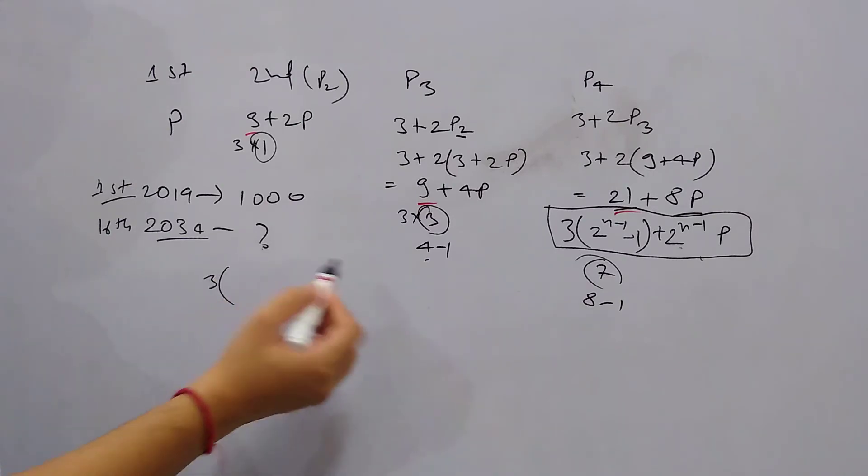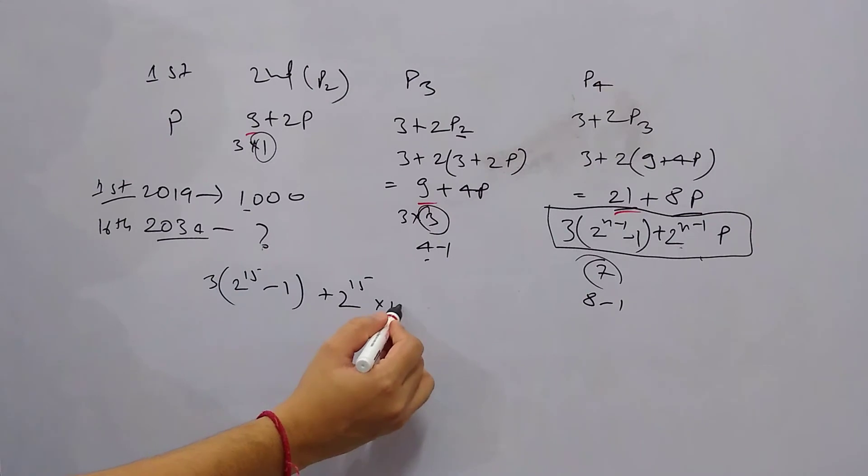So then it becomes 3(2¹⁵ - 1) + 2¹⁵ × p. And the value of p, or the initial value, is 1000 here. So times 1000.